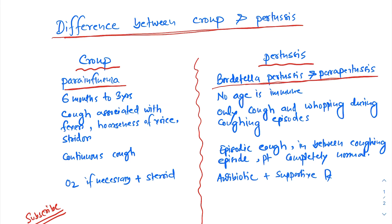The typical age for croup is six months to three years. There is no such typical age for pertussis - it is said no age is immune to pertussis.